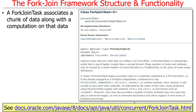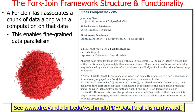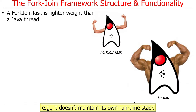A ForkJoinTask is basically an association of a chunk of data along with some computations on that data. It's useful because it enables very fine-grained parallelism and can handle very large numbers of tasks. Brian Goetz, one of the Java architects, has a presentation on data parallelism in Java and the ForkJoinPool worth checking out.